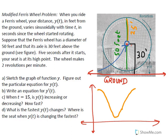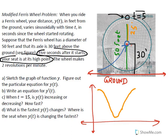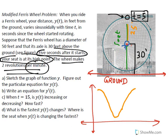Five seconds after the wheel starts rotating, your seat is at its high point. The wheel makes two revolutions per minute, meaning one revolution every 30 seconds. So at t = 5 seconds you're at the top; 30 seconds later at t = 35 seconds you're at the top again; and at t = 65 seconds once more.